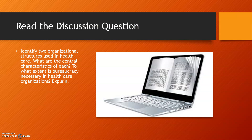Here is an example of a discussion question: 'Identify two organizational structures used in healthcare. What are the central characteristics of each? To what extent is bureaucracy necessary in healthcare organizations? Explain.' This is a packed question — it is like three questions in one. What I tell students is to create headings: one for organizational structure, one for characteristics, and one for bureaucracy.